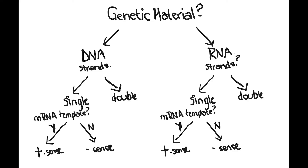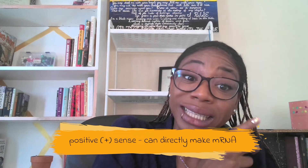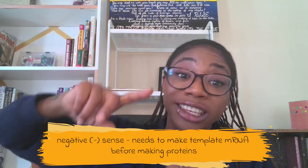Viruses are not living, so they have a whole different way to classify them. The most common way to classify viruses is based on certain characteristics: does the virus have DNA or RNA? If it has RNA, is it single-stranded or double-stranded? And if it is single-stranded RNA, is it the strand that is actually a template to make a protein, or does it have to be replicated first? If the RNA can directly make a protein without making the complementary strand first, it is called positive sense. If you have to make the complement strand before you can make the protein, it is called negative sense.